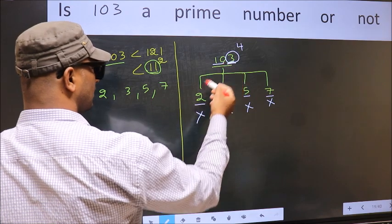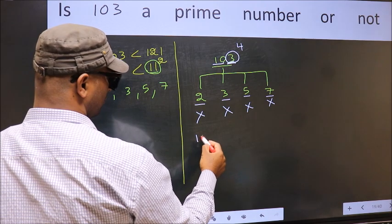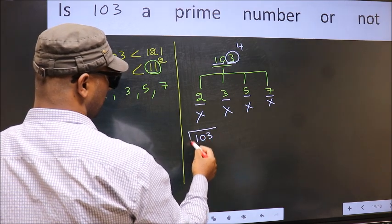Hence, 103 is not divisible by any of these numbers. So, 103 is a prime number.